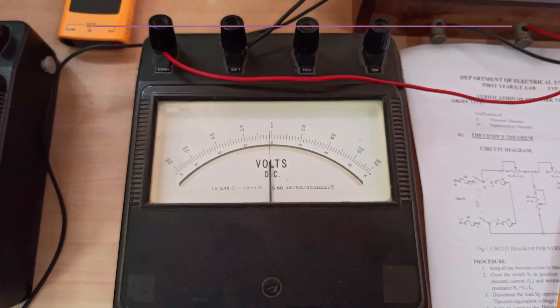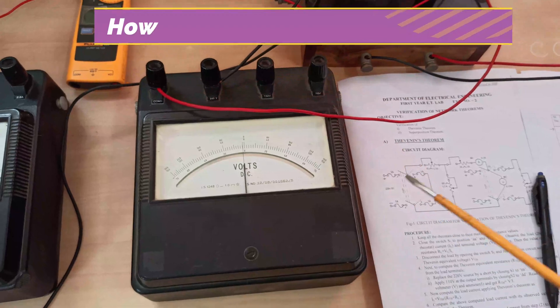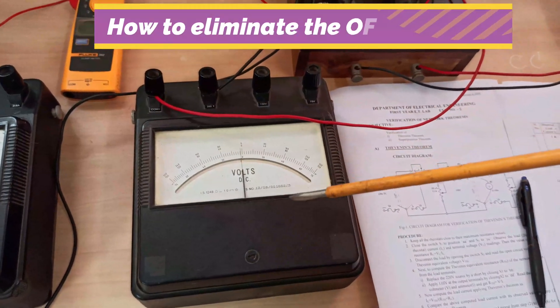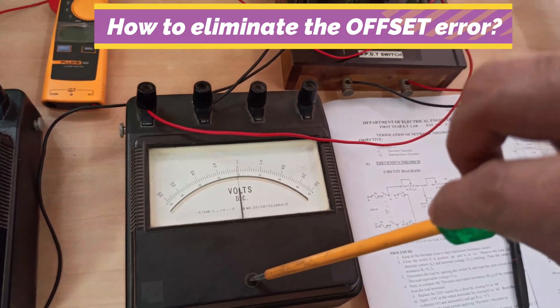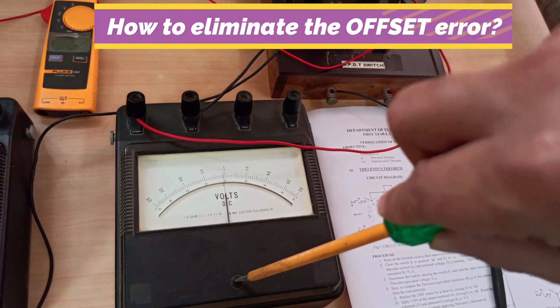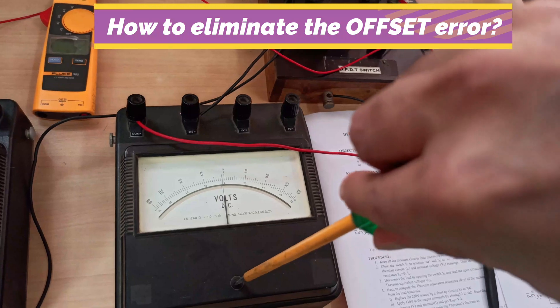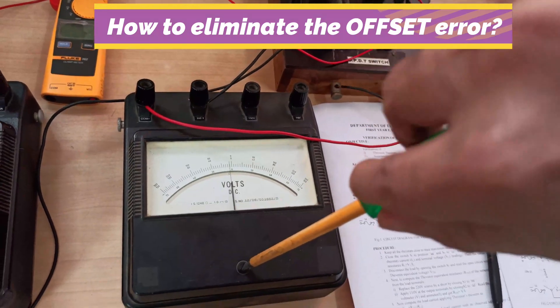So how to do that? You take a screwdriver like this and there is a screw here you can see. You have to adjust the screw such a way that the reading is at 0.